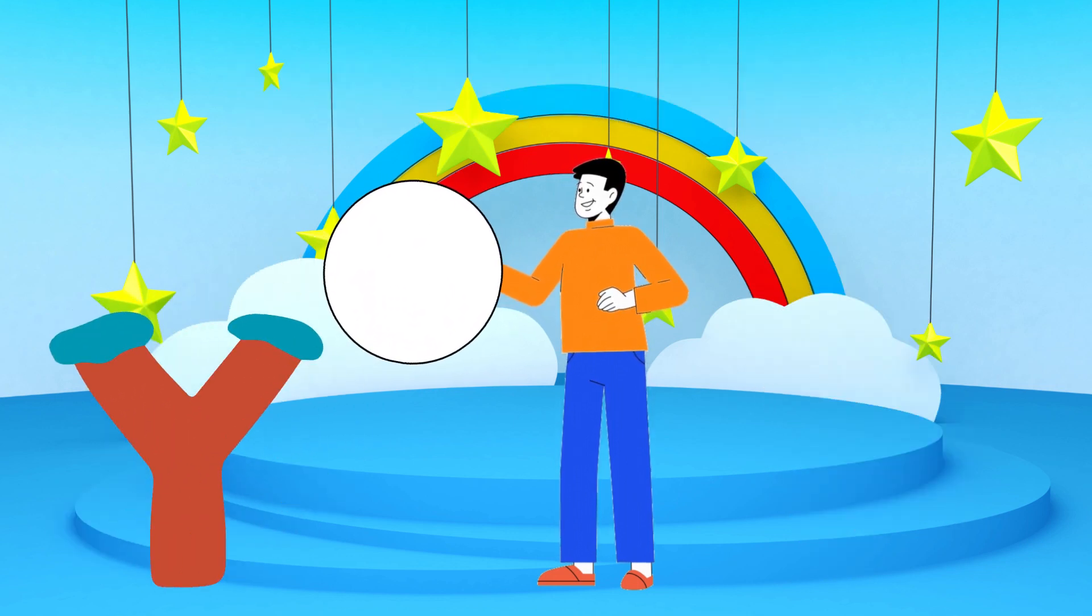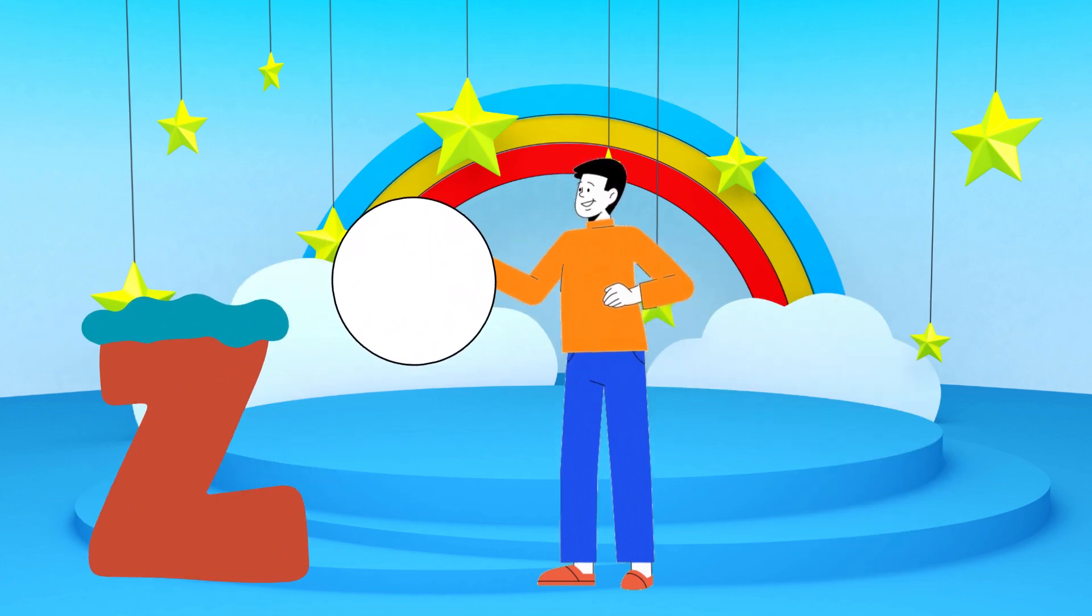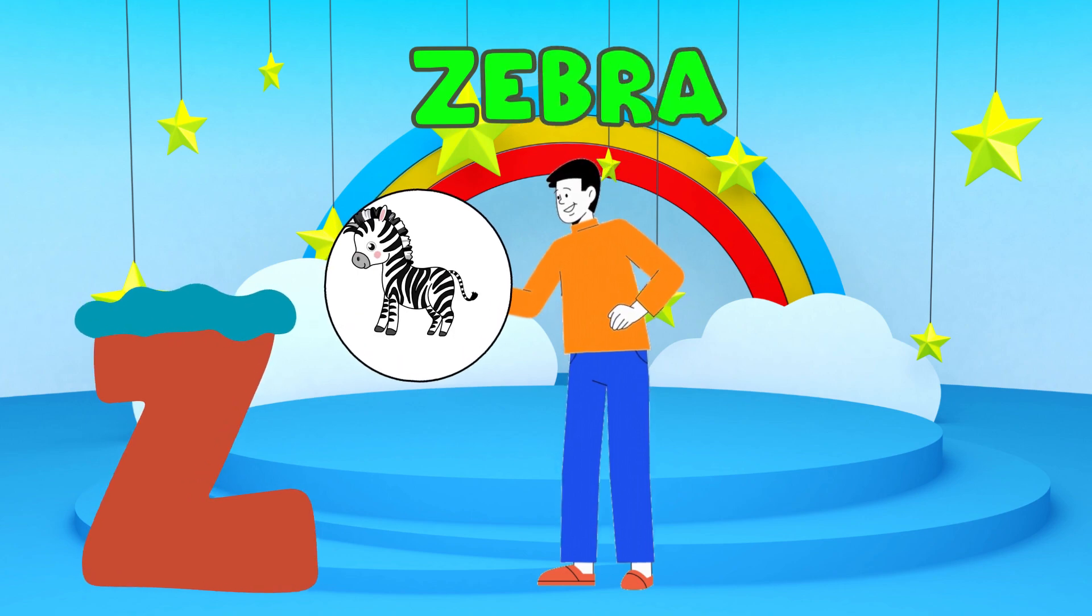Y is for yellow, ye-ye-yellow. Z is for zebra, z-z-zebra.